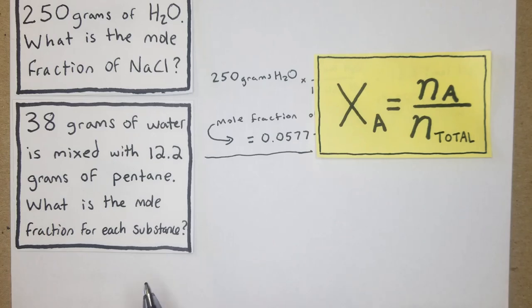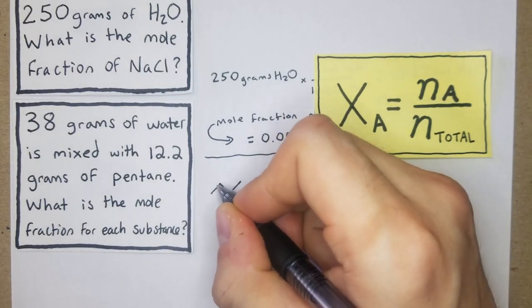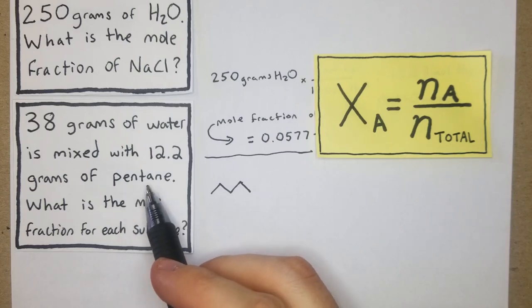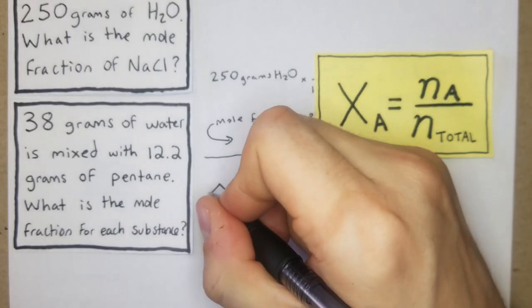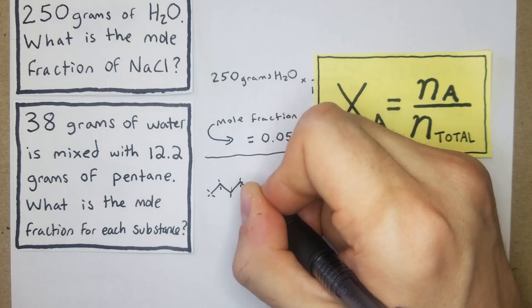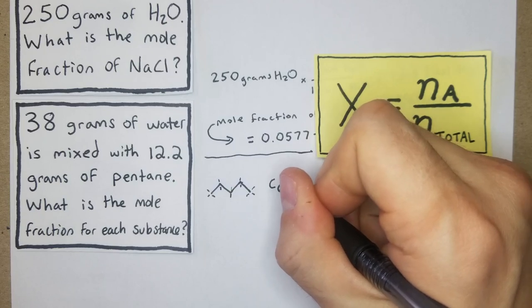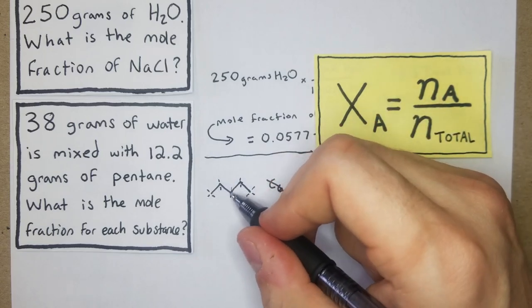If you're not sure what pentane is, whenever there's a carbon chain, pentane is one, two, three, four, five carbons. You can draw it out as a chain and then figure out what you have for your actual compound formula. Count the number of carbons and then draw a line for each hydrogen. So we have C5H12, assuming it's saturated.